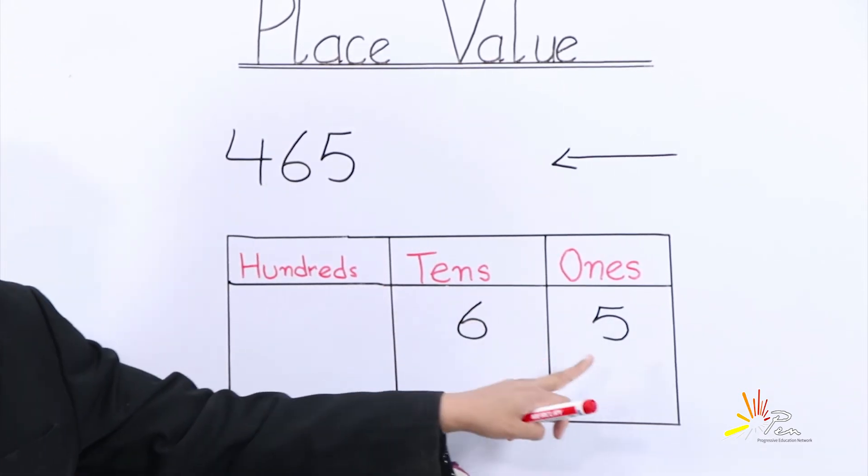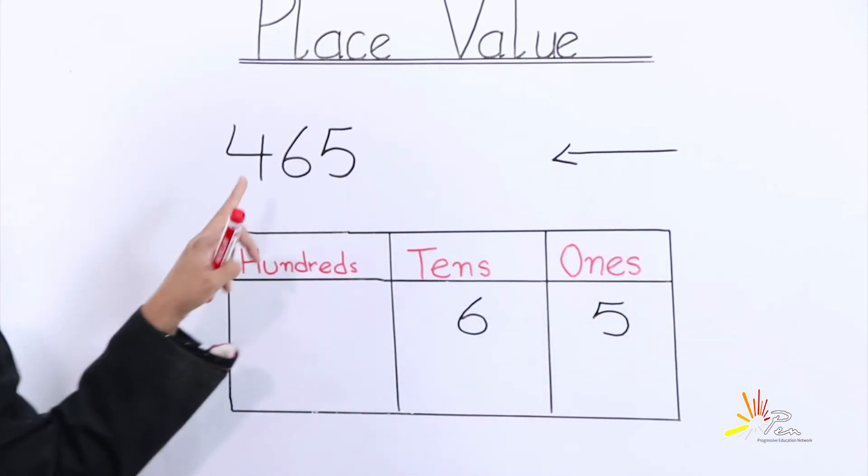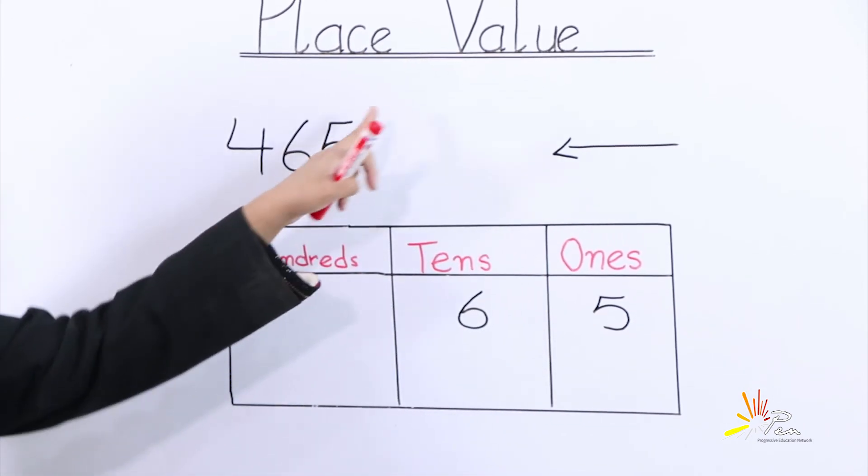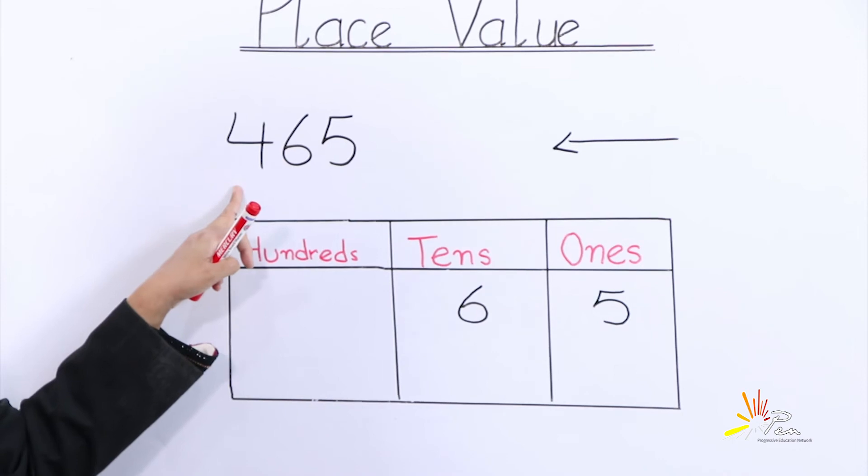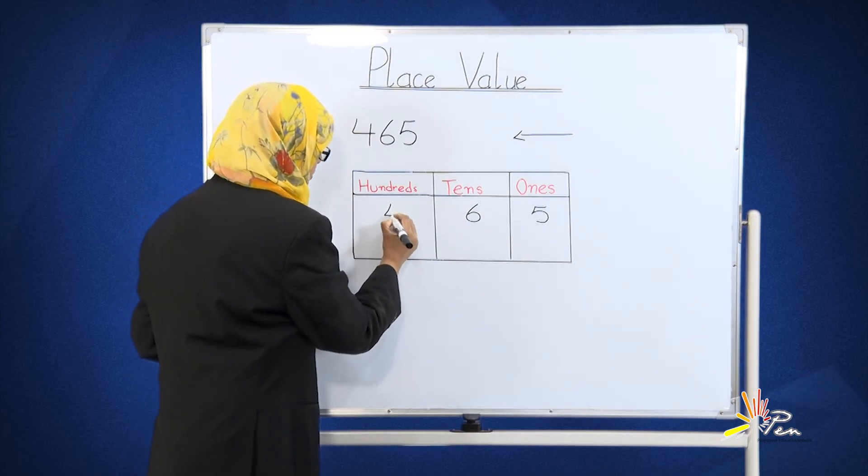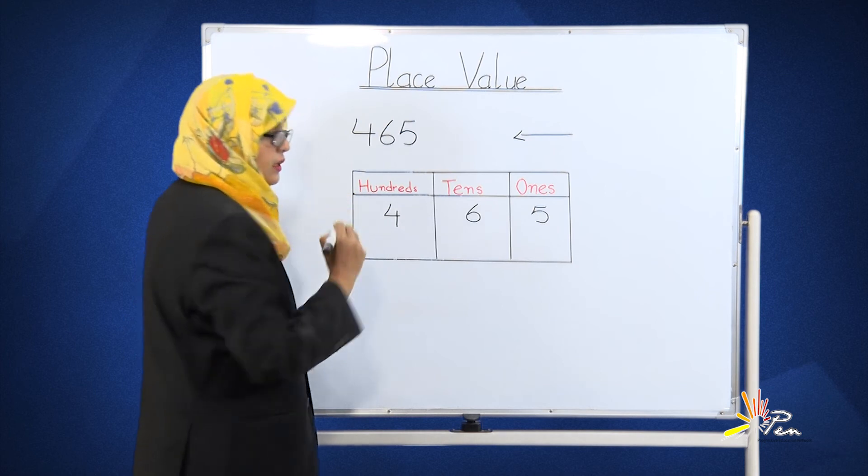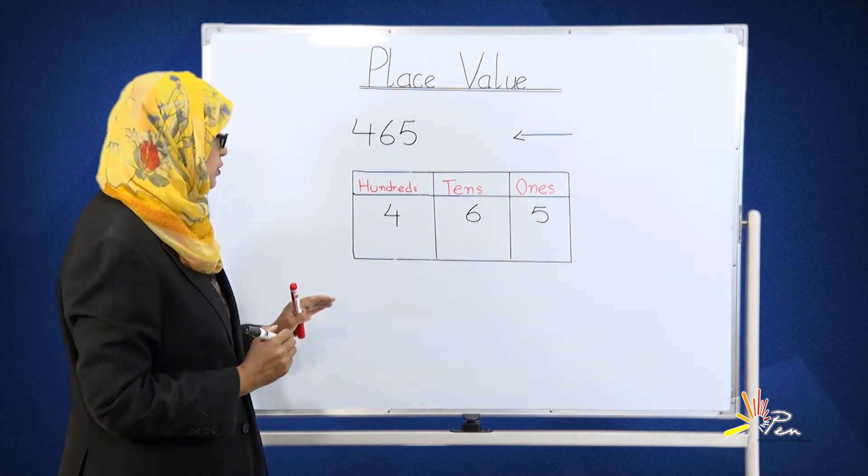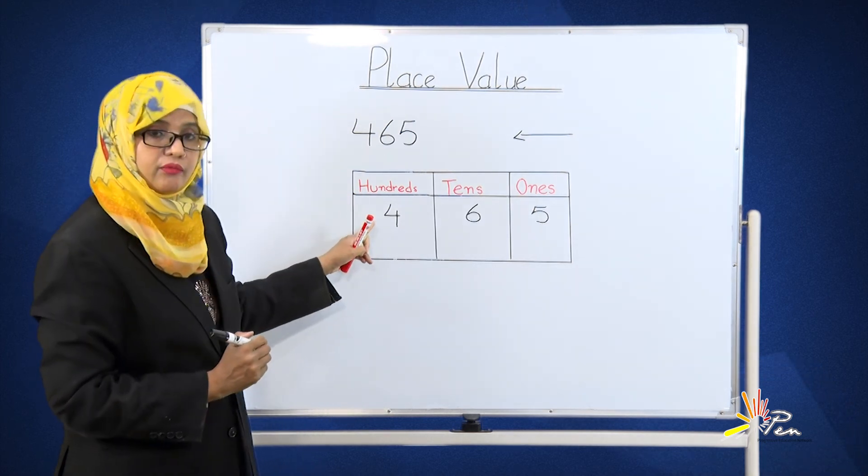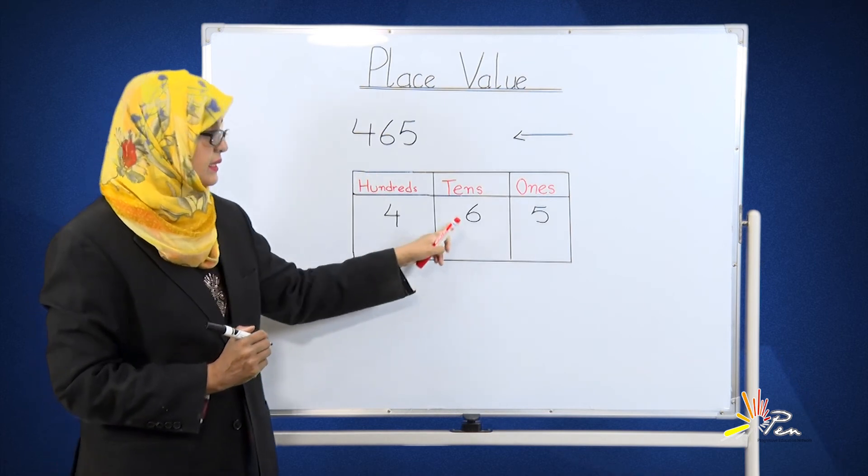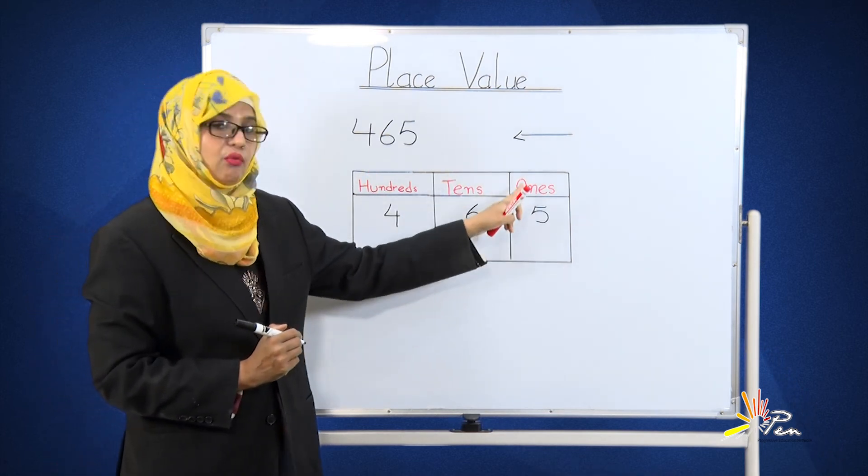Six tens and five ones. The last remaining number from this side is four. Four will be written in the box of hundreds. Now, here we come to know that we have four hundreds, six tens, and five ones.